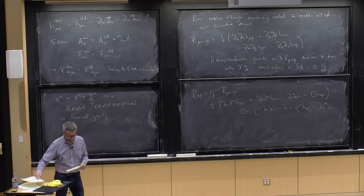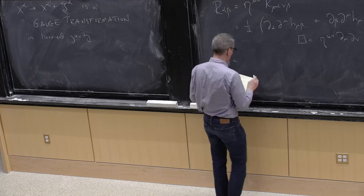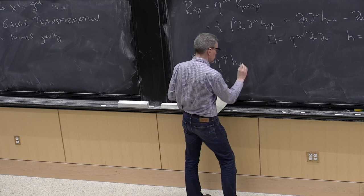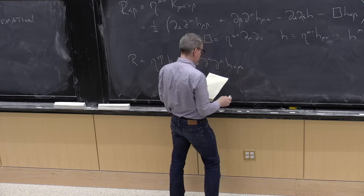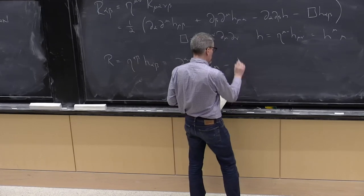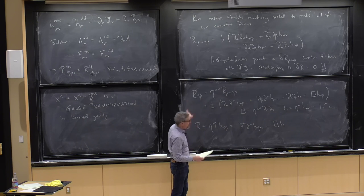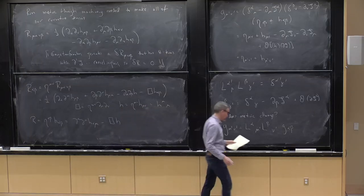Evaluating the Ricci scalar R involves one further contraction, which turns out to be ∂^α∂^μh_αμ − □h. We now have all the pieces needed to make the Einstein tensor.